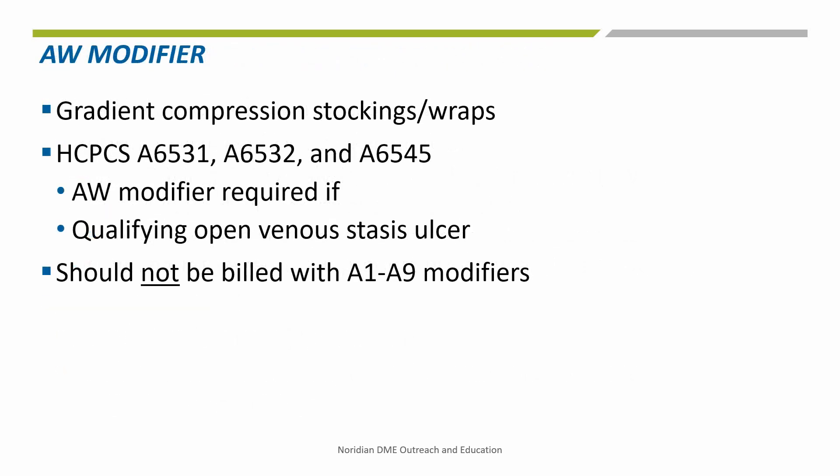For gradient compression stockings and wraps, specifically HCPCS A6531, A6532, and A6545, the AW modifier should be appended to these codes for qualifying open venous stasis ulcers. These codes should not be billed with the A1 through A9 modifiers when they are used for an open venous stasis ulcer.